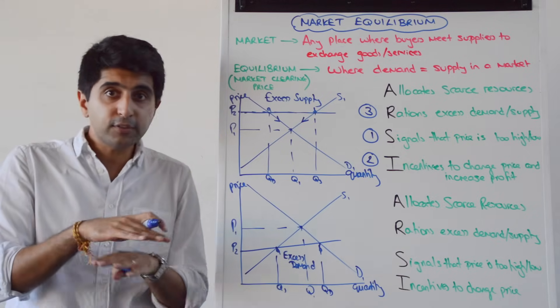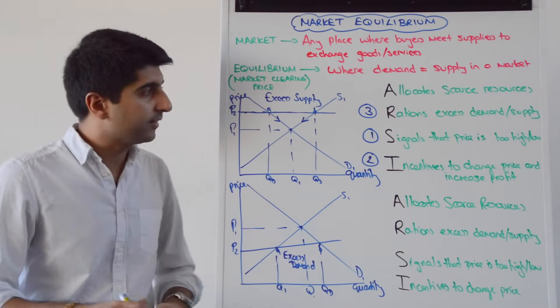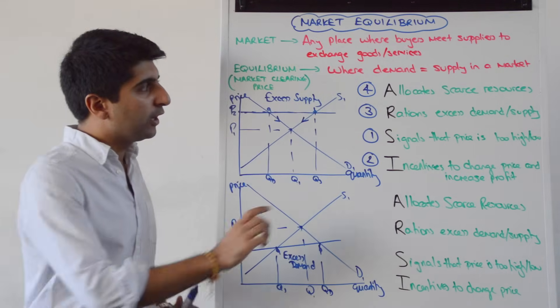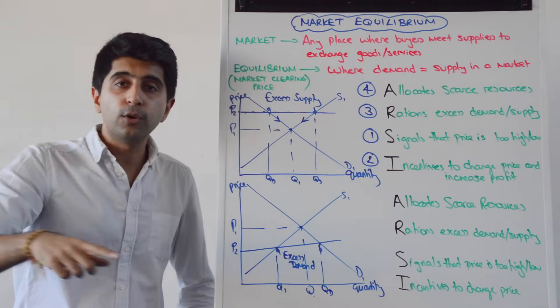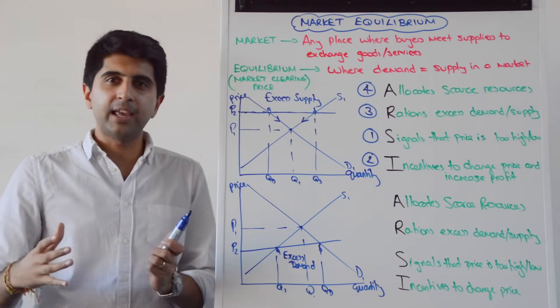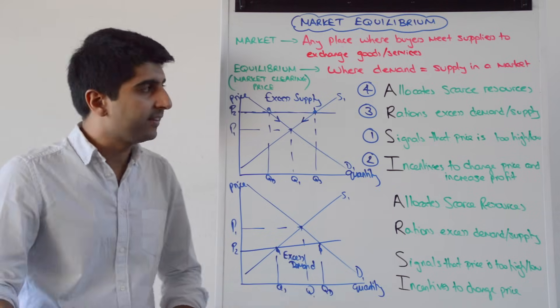And at P1 and Q1, because there are no excess supplies and no excess demand, we have a perfect allocation of scarce resources. We're going to look at that in way more detail. If you go to a later video in the playlist, you'll see how I analyze what I mean by a perfect allocation of scarce resources in more detail.